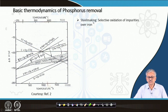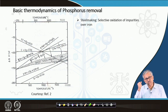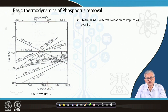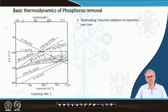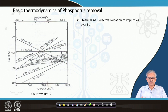In steelmaking, it is a selective oxidation of impurities over iron. If you want to oxidize the impurities, iron will also get oxidized — this is natural because when you charge oxygen into the liquid bath, iron is 95% by weight. So by the law of mass action, it is the iron that will get oxidized first, then the impurities. We want to oxidize the impurity in preference to iron; otherwise, a lot of iron will be lost through the slag.